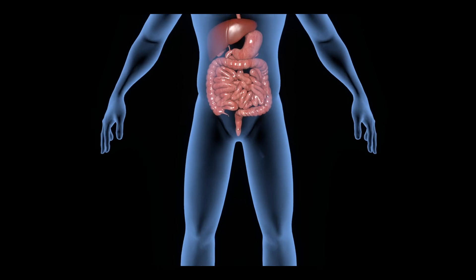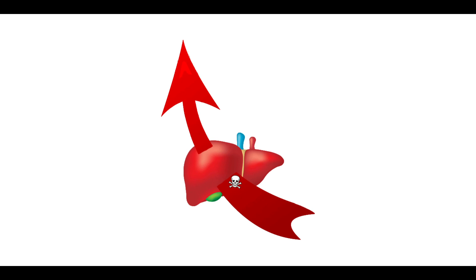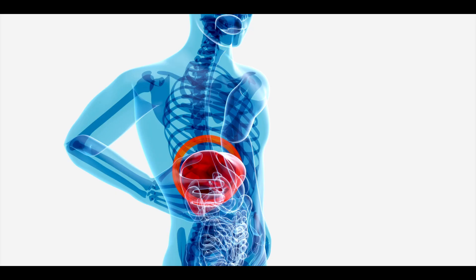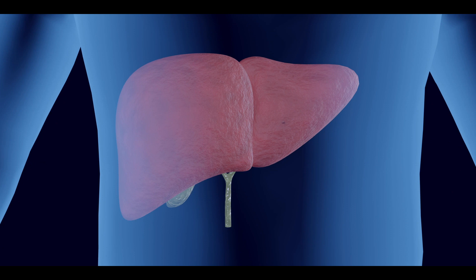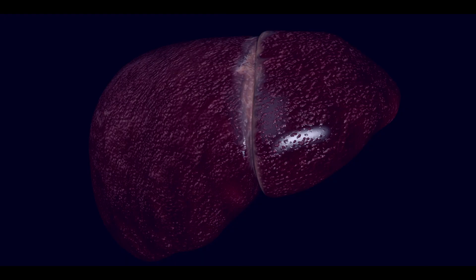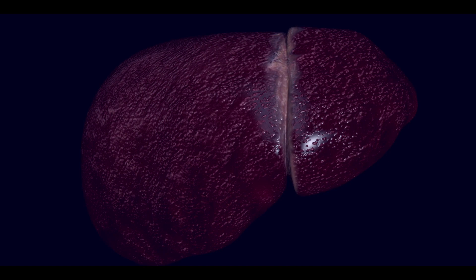Liver is an upper abdominal organ located on the right side of our stomach. It removes chemical wastes from our body. If certain reasons cause inflammation of the liver and liver cells could not work properly, the liver function will be disturbed and result in formation of scars in the damaged area that permanently damage the liver if spread to other parts. This condition is called liver cirrhosis.